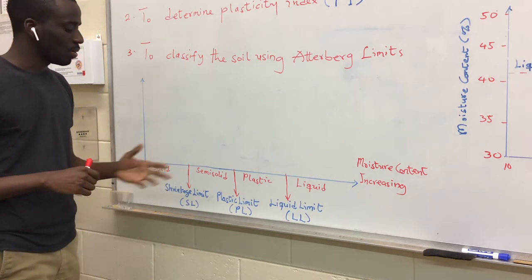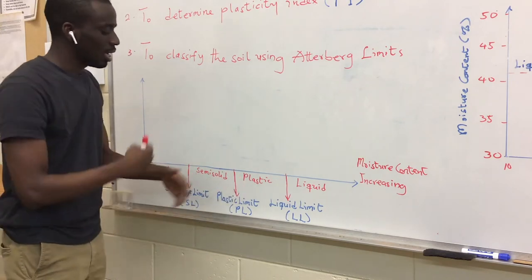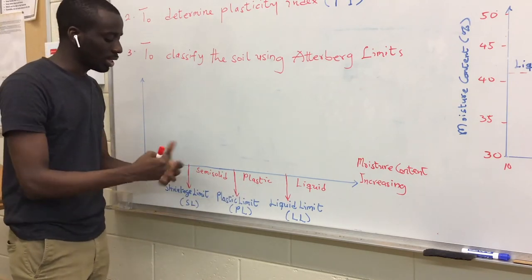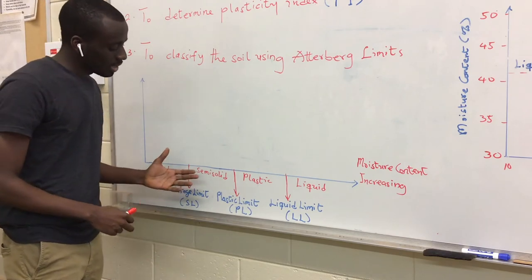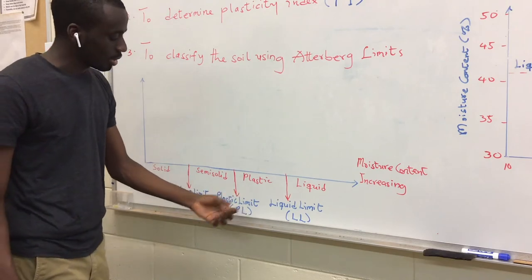So let's move on to the plastic limit. From the semi-solid state into the plastic stage is what you see when you add more water to it. And then the transition from the semi-solid to the plastic state is the plastic limit.